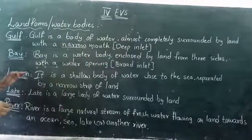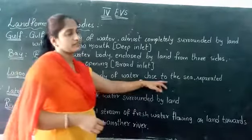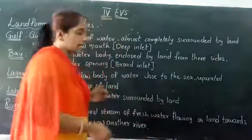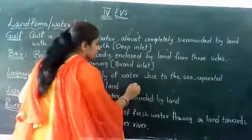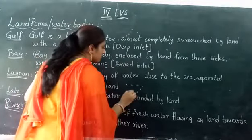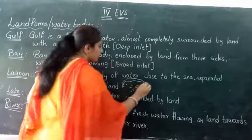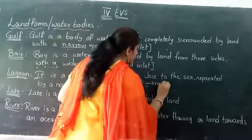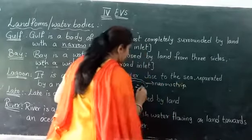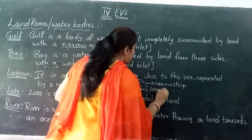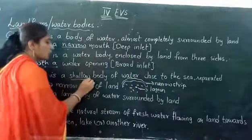Next, coming to the lagoon. It is a shallow body of water close to the sea, separated by a narrow strip of land. Shallow means not much deeper.